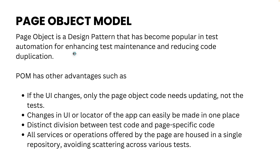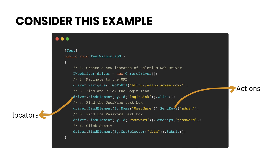Page object model achieves test maintenance and reduces code duplication using many different features. The first advantage is that if the UI changes, only the page object code needs to be updated, not the whole test. As you can see, we have this particular test which has driver initialization, navigation to the URL, and it also performs operations by identifying a locator. We have a locator and an action to perform, like click and send keys.